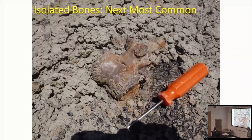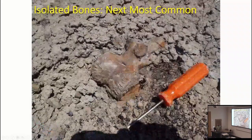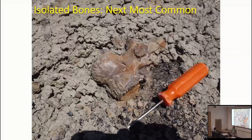By the way, these fragments here — that little black shiny stuff — that's coal. So what sort of environment does that tell us this dinosaur was found in? A swampy environment — exactly. There was a lot of plant material accumulating and buried faster than it could decay.